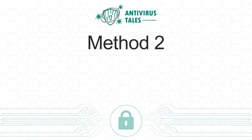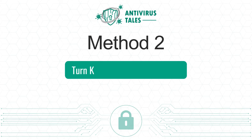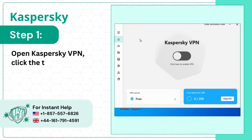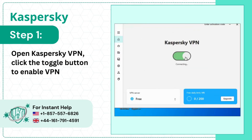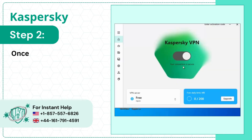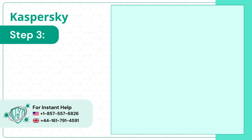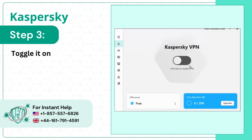Method 2: Turn Kaspersky VPN on and off. Step 1: Open Kaspersky VPN and click the toggle button to enable VPN. Step 2: Once connected, toggle it off. Step 3: Toggle it on again and see if it works.